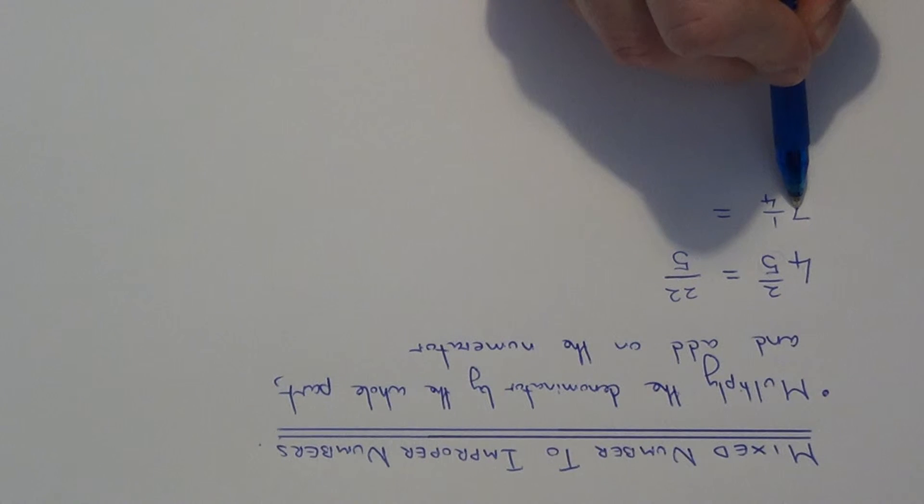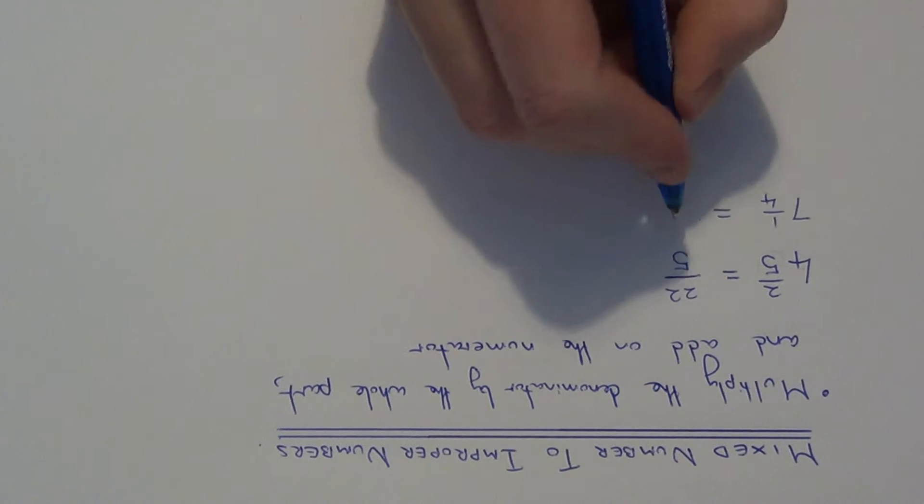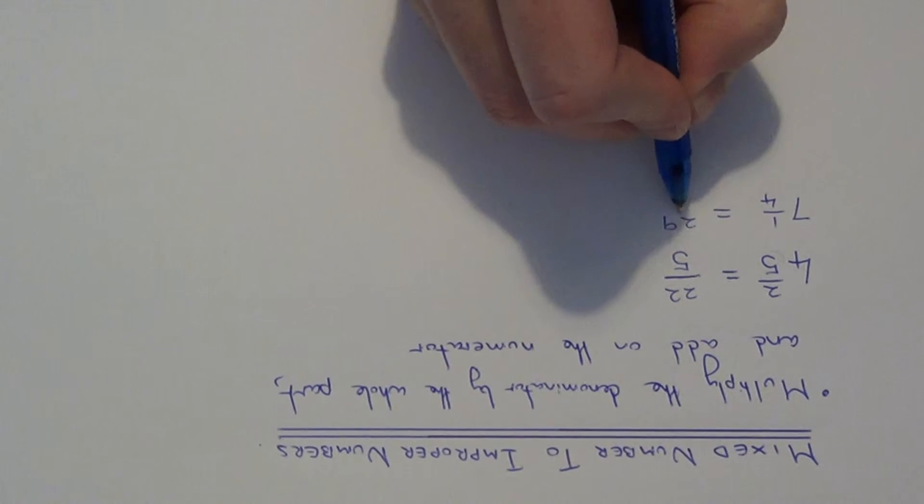So let's do 4 times 7 is 28, add on 1 which is 29, and the denominator will stay the same.